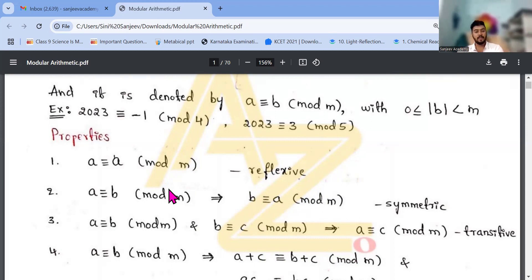Mod m, I am not repeating again. Then a congruent to b mod m and b congruent to c mod m, that is a congruent to c, that is transitive.